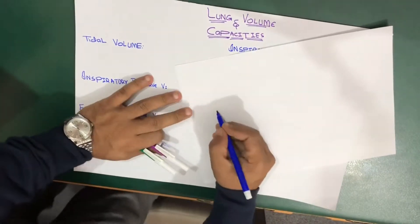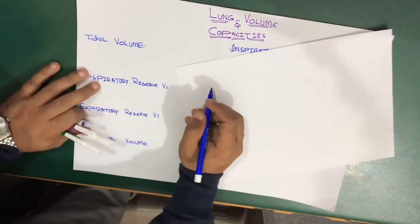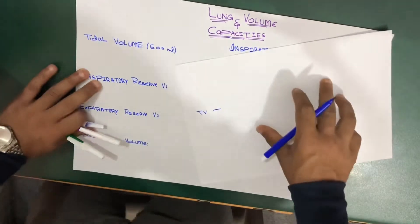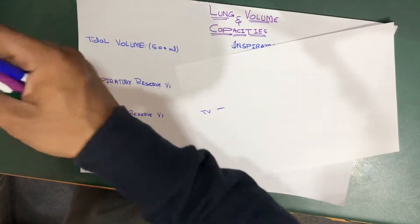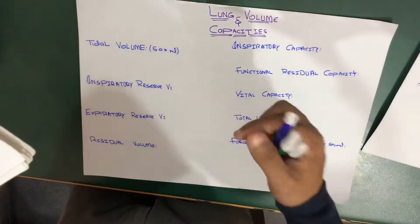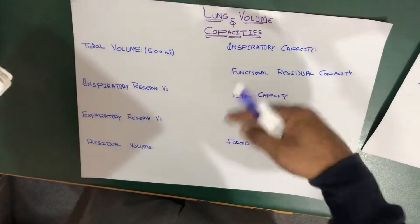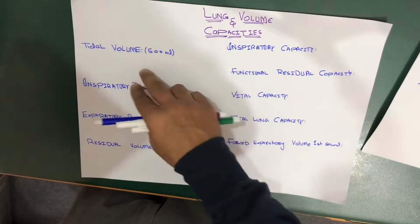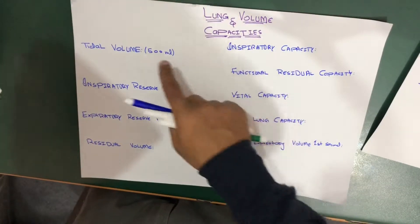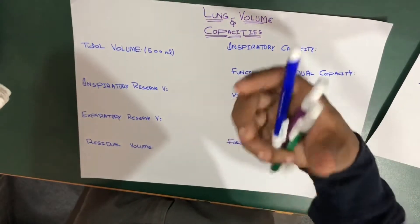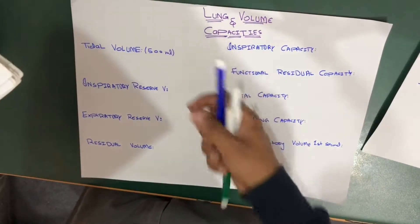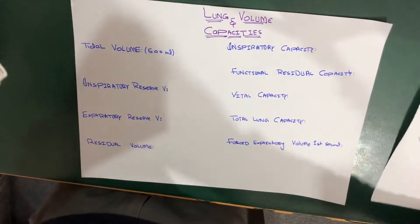We'll start with tidal volume, shown here on the chart. Tidal volume is around 500 milliliters. It is the amount of air that is inspired or expired in each normal breath. Right now while you are listening to this lecture and breathing, approximately 500 mL of air is being exchanged. This amount of air inspired or expired in each normal breath is called the tidal volume.